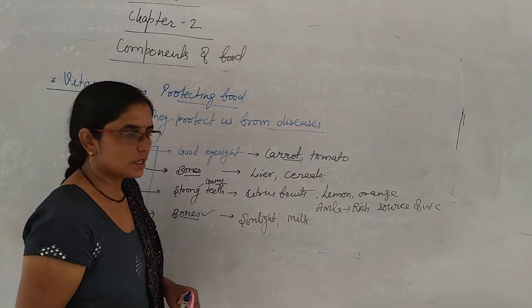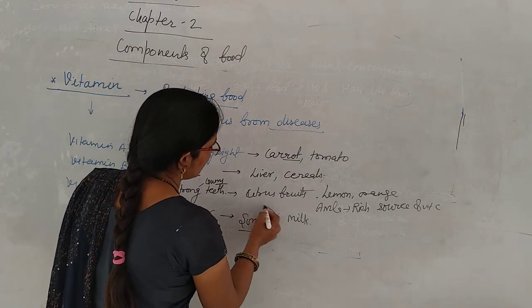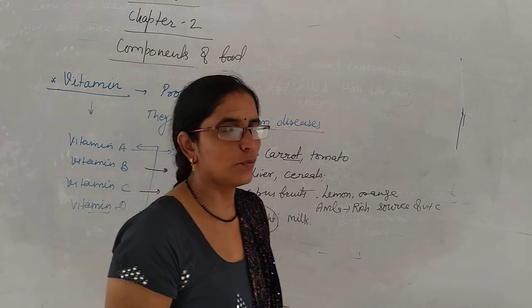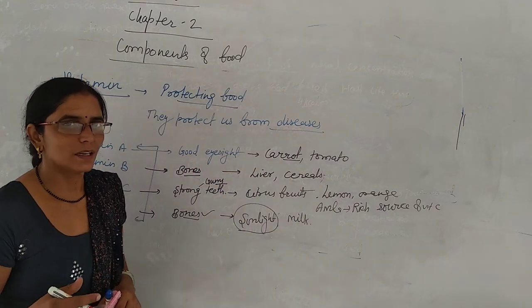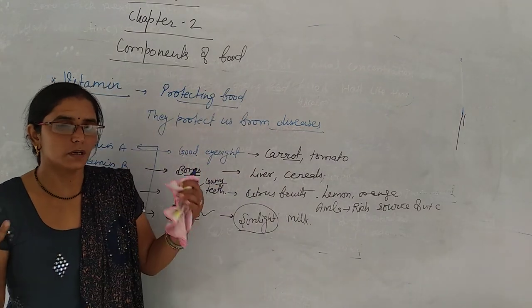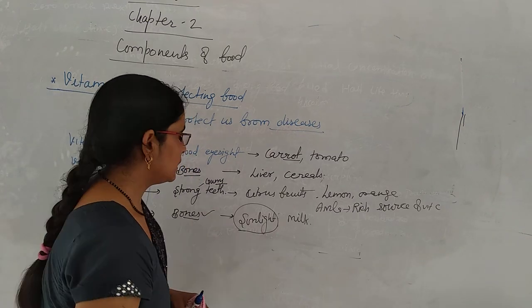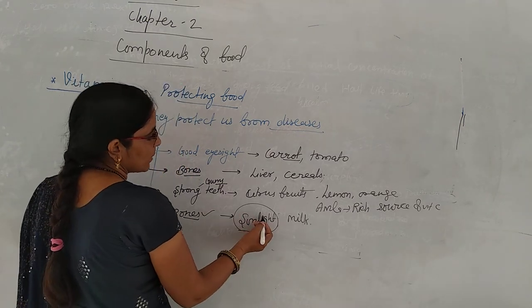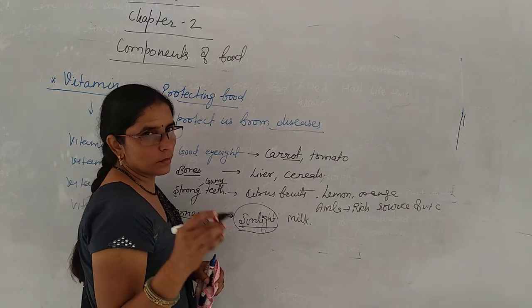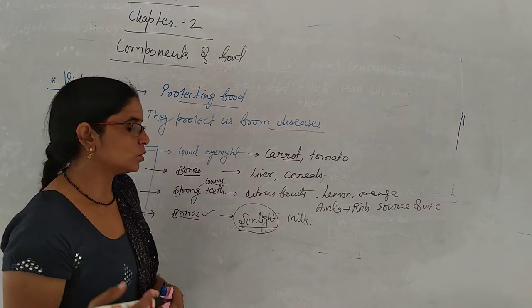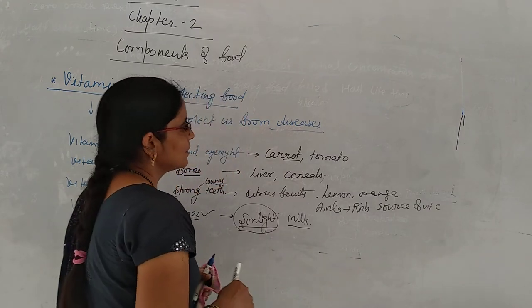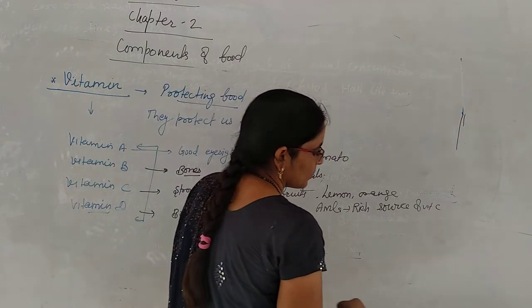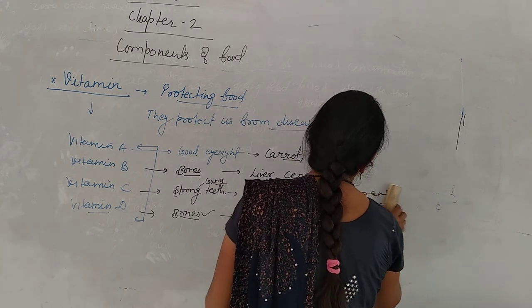Vitamin D is the most important. Vitamin D is the sunlight. If you are 5-10 minutes or half hours in the morning, you don't have to go in the afternoon. Early morning sunlight, you will find vitamin D. So this is the vitamins that protect our body.